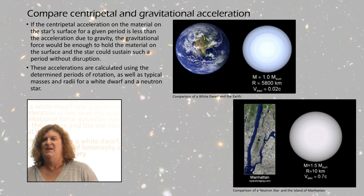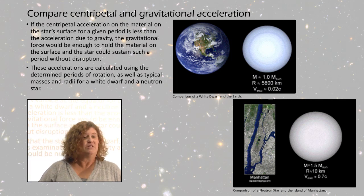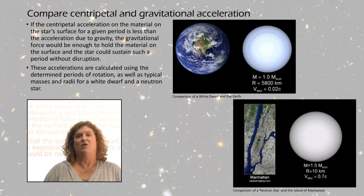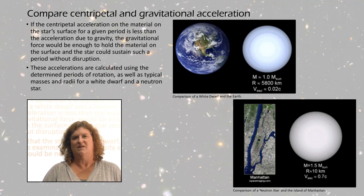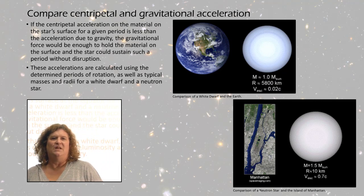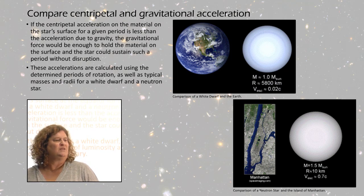Now to determine whether they're a neutron star or a white dwarf, the first thing would be for students to find the acceleration due to gravity on the surface of a white dwarf and a neutron star. We would use a typical mass and typical radius for each.